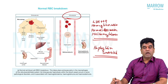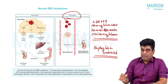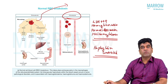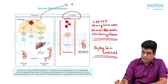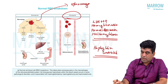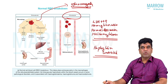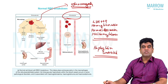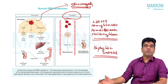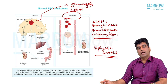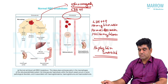Extravascular hemolysis happens predominantly in the reticuloendothelial system, especially the spleen. That is why in extravascular hemolysis you are going to get splenomegaly, which is generally not seen in intravascular hemolysis. In extravascular destruction, this much florid destruction does not happen, so LDH is raised but you would put it as 2+ rather than 3+.